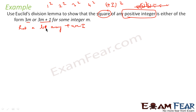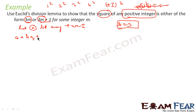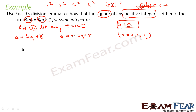So I'll say: let a be any positive integer, because the question says positive integer. And we'll say b is equal to 3. Why b equals 3? Because the question says 3m or 3m plus 1. Going by Euclid's division lemma, we can say a equals bq plus r, so a equals 3q plus r, and in this case r will be 0, 1, or 2, because r is always less than b and greater than or equal to 0.